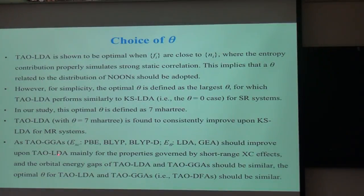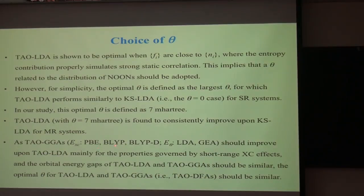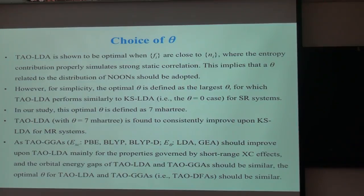We can move on to the GGA approximation, tau GGA. One can use a GGA exchange-correlation functional, and for the E_C_dot term, either LDA or gradient expansion approximation can be used. We argue this should improve upon tau LDA mainly for properties governed by short-range exchange-correlation effects. We also argue the orbital energy gap and the optimal C_dot for tau LDA and tau GGA, which we call tau DFA, should be similar.